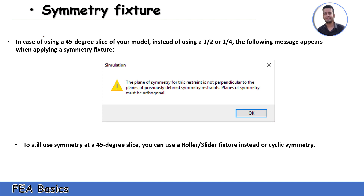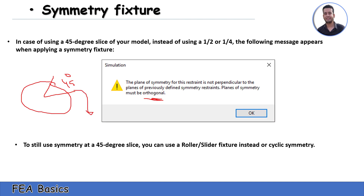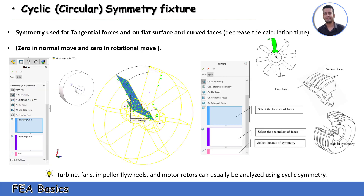In the case where the simulated part has a 45-degree portion — if you have a circular part divided at 45 degrees — you may get this message: 'The plane of symmetry for these restraints is not perpendicular to planes of previously defined symmetry restraints. Planes of symmetry must be orthogonal.' In this case, use roller or slider fixtures instead to avoid these problems.